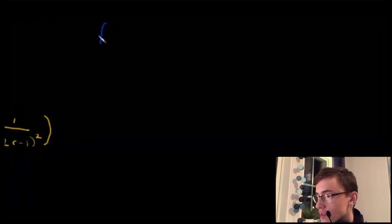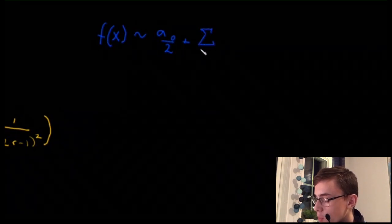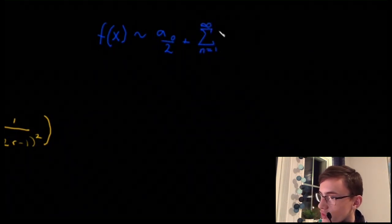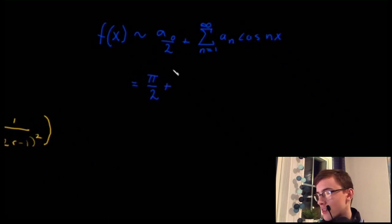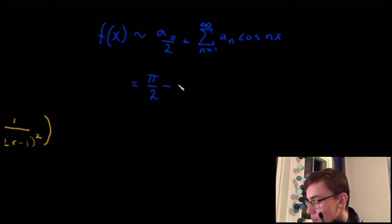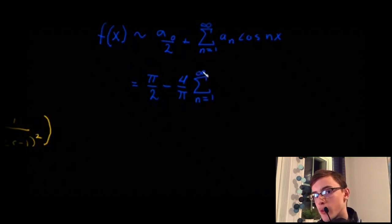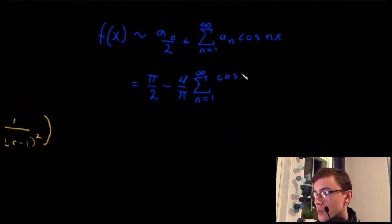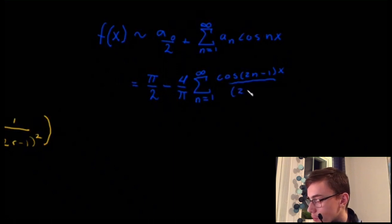Then f(x) is approximately equal to a₀/2 plus the sum from n=1 to infinity of aₙ cos(nx). Plugging in, this equals π/2 minus (4/π) times the sum from n=1 to infinity of cos((2n−1)x) / (2n−1)², where we have relabeled the summation index without loss of generality.